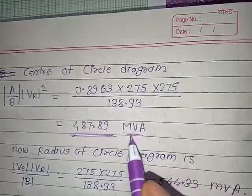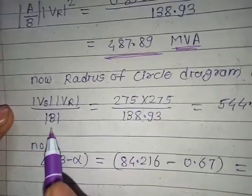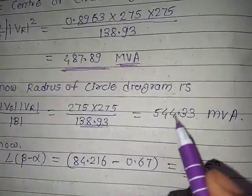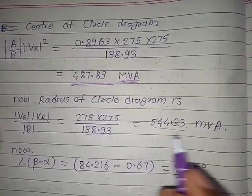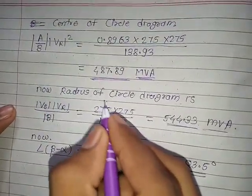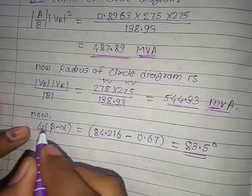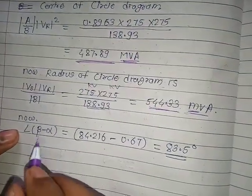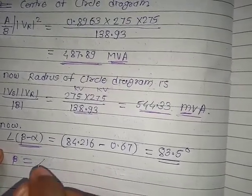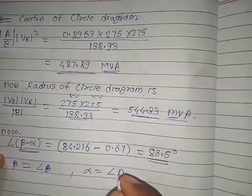The radius of the circle is Vs × Vr / |B| = (275 × 275) / 138.93, giving a radius of 544.33 MVA. This is also in MVA since the voltages are in kV. The center is plotted at angle β − α, where β is the angle of B and α is the angle of A of the transmission line parameters.